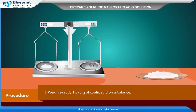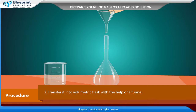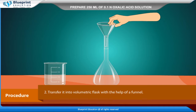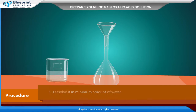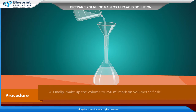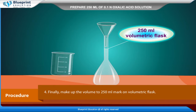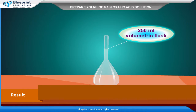Procedure: Weigh exactly 1.575 gram of oxalic acid on a balance. Transfer it into a volumetric flask with the help of a funnel. Dissolve it in a minimum amount of water. Finally, make up the volume to the 250 ml mark on the volumetric flask.